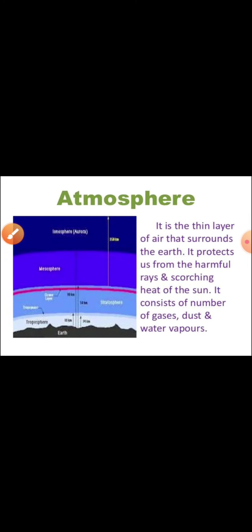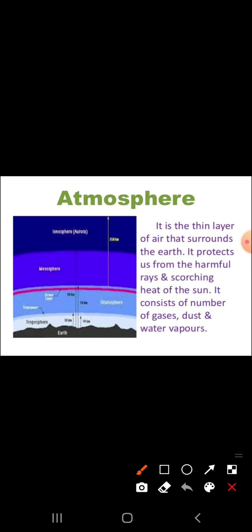Atmosphere is the thin layer of air that surrounds the earth. One important thing — it protects us from harmful rays and scorching heat of the sun. It consists of a number of gases, dust particles, and water vapor.